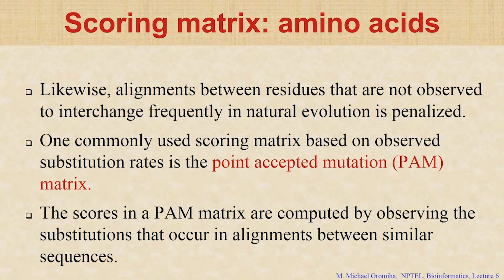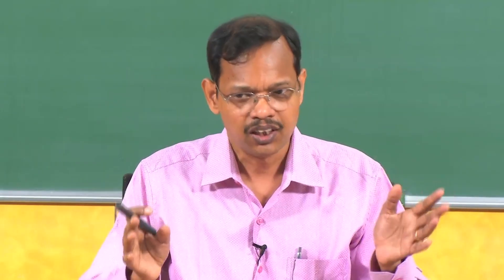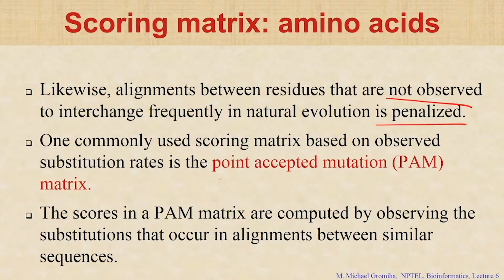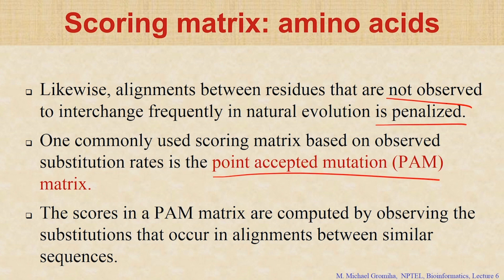How to do that? In the alignment, if residues are aligned quite frequently, give them positive values; if they are not observed, penalize them with a lower score. This is derived from alignments of sequences of various homologies. They derive a matrix called the PAM — Point Accepted Mutation matrix. You derive scores based on how frequently the mutation occurs. PAM stands for Point Accepted Mutation matrix. You derive the PAM matrix from substitutions that occur in alignments between similar sequences.